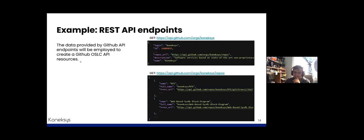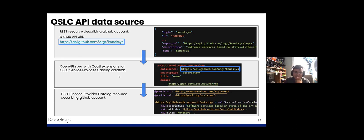To explore these features in depth, we can use the following endpoints provided by the GitHub API. The first endpoint provides a summary of the GitHub account, and the second exposes information about each repository contained in that account. We can check how to create a service provider catalog through GitHub API data. The top picture exposes a REST resource of the GitHub API describing the account summary, the middle picture shows the Coattle extension employed to select the REST API data, and the third shows the REST resource mapped into RDF properties and exposed as an OSLC service provider catalog resource.